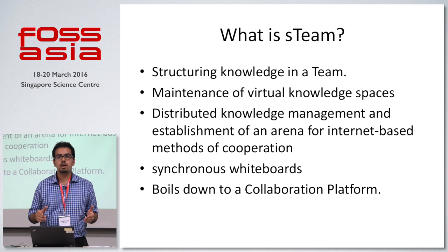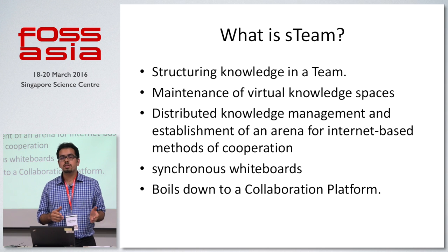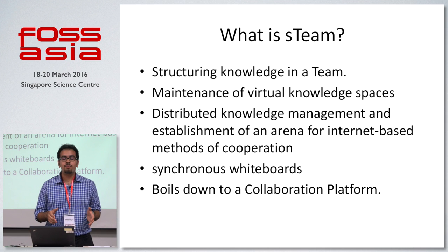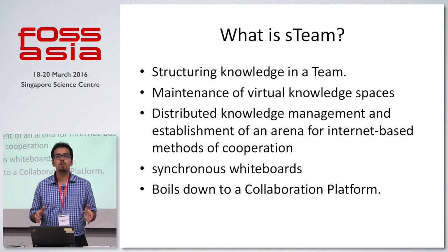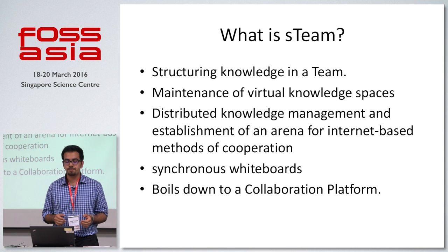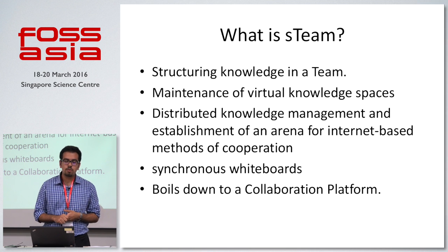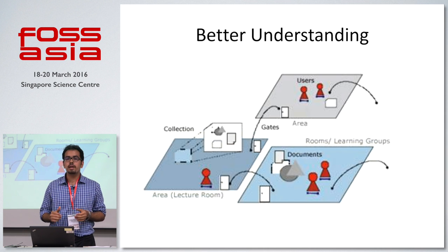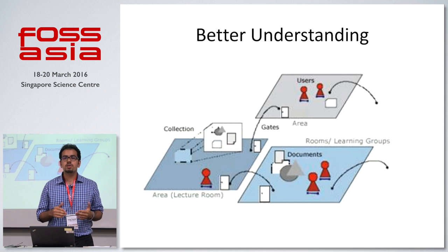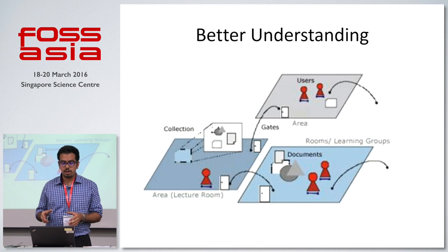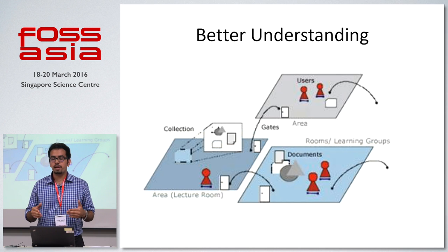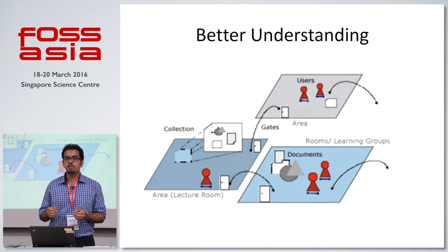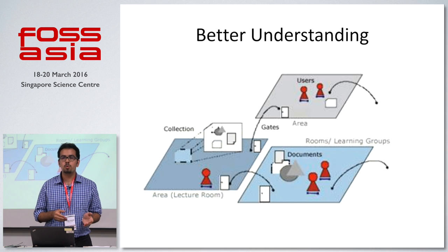There's a concept of branches in GitHub; there are rooms in this, and we have tried to replicate the real-world scenario in this collaboration platform. So, maintenance of virtual knowledge spaces — everyone has a room of their own, like you can see on the screen. Every user that gets into this room belongs to that group. These rooms are named, and I'm trying to replicate a real-world scenario. There are gates to other rooms which are, again, permission-based, based on whose room it is.